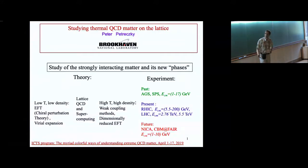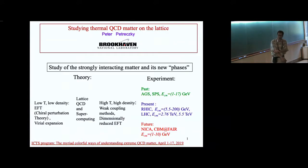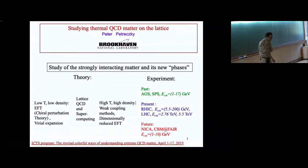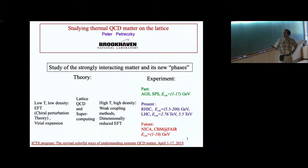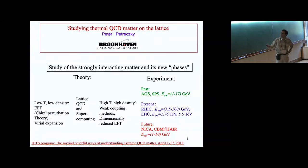There's a relevant effective theory approach called the dimensionally-reduced effective field theory. On the experimental side, that's a large effort as well. It started in the late 80s and beginning of 90s with heavy ion experiments at AGS and SPS in CERN, and those were covering relatively low energy, from 1 to 70 GeV in center of mass energies.